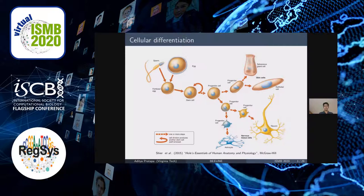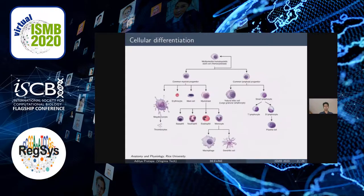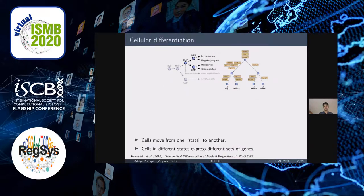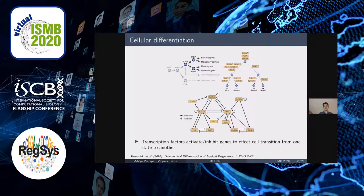Cell differentiation doesn't just occur during embryonic development, but also in adulthood as adult stem cells divide and create fully differentiated daughter cells during tissue repair and normal cell turnover. For example, hematopoietic stem cells give rise to different types of blood cells. Here you're looking at an image where from a single hematopoietic stem cell we can obtain all mature blood cells through a hierarchical series of lineage decisions. Conceptually, we can think of cells in different states as expressing different sets of genes.